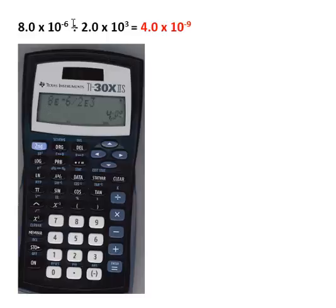Then I hit the function of division, and then 2, second function EE 3. The EE, remember, means times 10. Then when I hit equal, I get the correct answer, which is 4 times 10 to the minus 9.